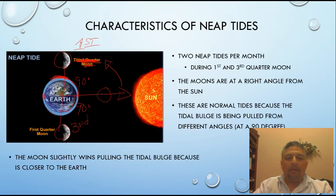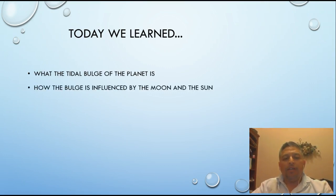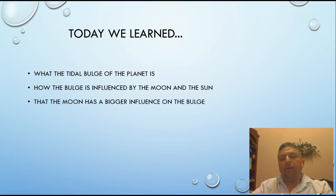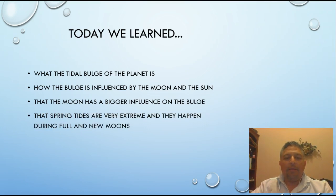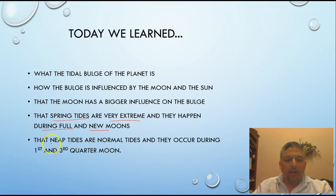The moon slightly wins in pulling the tidal bulge because it's closer to the Earth. You also have two high tides and two low tides throughout the 24-hour period. Today we learned what the tidal bulge of the planet is, how it is influenced by the moon and the sun, and that the moon has a bigger influence. Spring tides are very extreme and happen during the full and new moons. Neap tides are normal tides that occur during the first and third quarter moons.